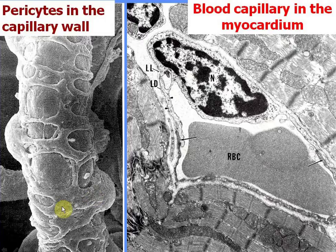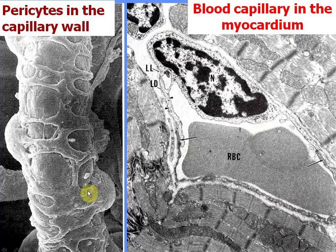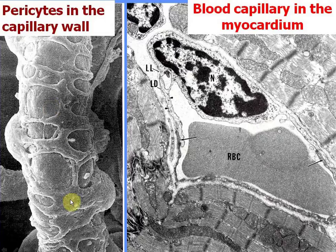This scanning electron micrograph demonstrates the pericytes in the capillary. A pericyte has long processes surrounding and encircling the endothelial cells lining the blood capillary. So if they contract, they can stop blood flow in the capillary — thus they may regulate blood flow in blood capillaries by their contraction and relaxation.